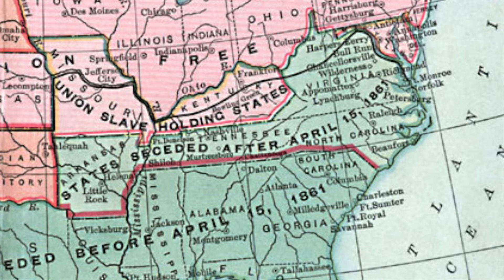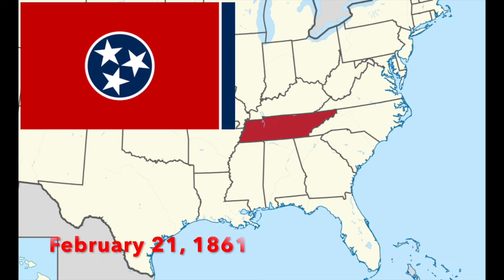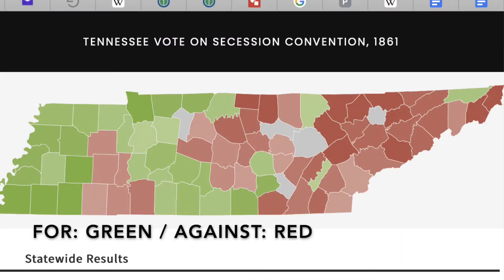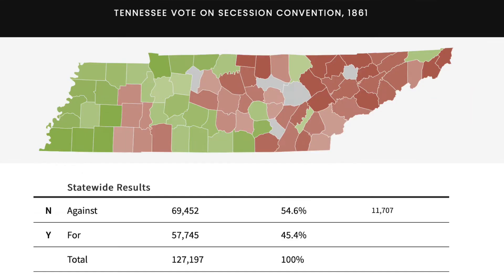Now, Arkansas, Tennessee, Virginia, and North Carolina still had yet to secede or join the Confederacy. Tennessee became the only state to hold a referendum on having a convention — not a referendum on seceding, but a referendum on having a secession convention. Interestingly enough, 54% voted against having a secession convention.